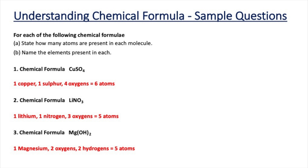In the second example we have LiNO3, which is lithium nitrate. You can see there is a capital L, a capital N, and a capital O — three capital letters, so three elements present. We have one lithium atom, one nitrogen atom, and three oxygen atoms present in the compound, giving a total of five atoms altogether. That's what the chemical formula is telling us.